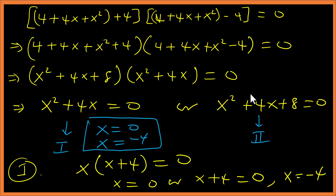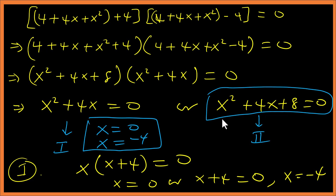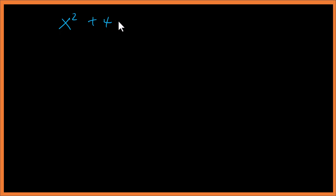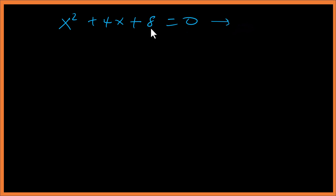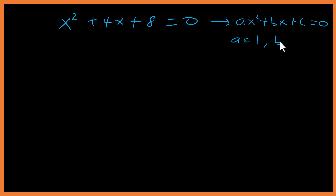Now let's solve x² + 4x + 8 = 0. We compare this with the general quadratic equation ax² + bx + c = 0, so a = 1, b = 4, and c = 8.